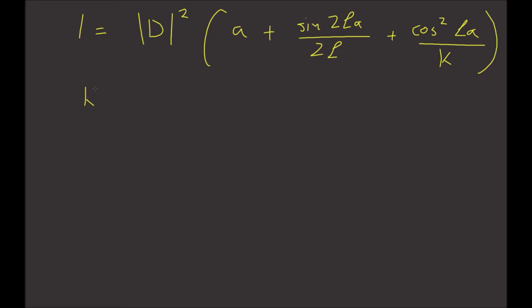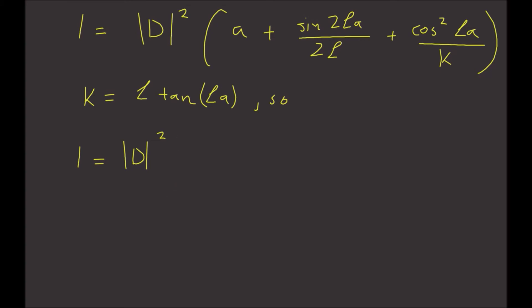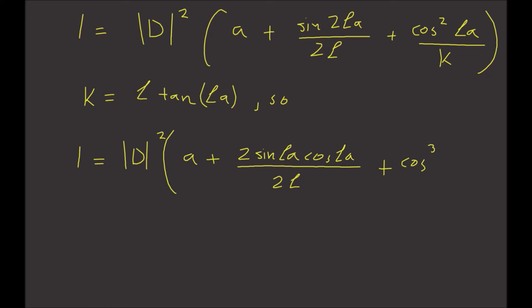Furthermore, we have K equal to L times tangent of L times A. Substituting this, we have 1 equal to D squared times a plus 2 sine of La cosine of La divided by 2L, plus cosine cubed of La divided by L times sine of La.